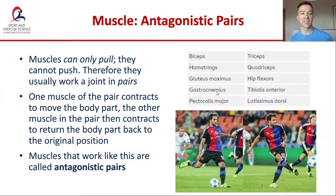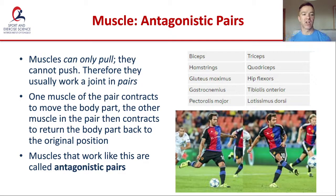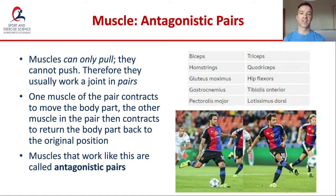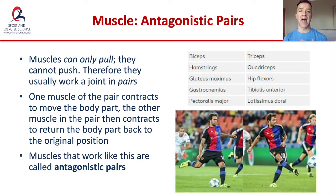To get started, we're going to talk about antagonistic pairs. When we talk about muscles and movement, we should remember that muscles can only pull — they cannot push. Therefore, when muscles are working around a joint they are working in pairs. When a muscle contracts it creates movement at a joint. For that joint to go back to its original position, another muscle contracts and pulls it back.